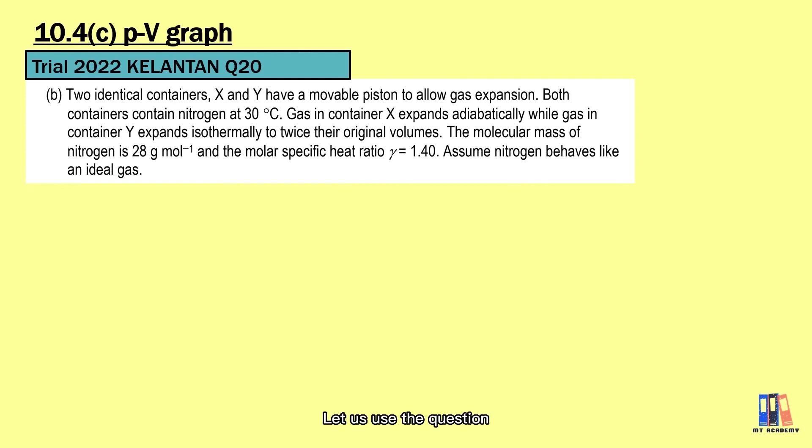Let us use the question from Trial Paper of Kelantan in 2022 as our case study. We are given with two containers with a movable piston. Both contains nitrogen at 30 degrees Celsius. The gas expands adiabatically in container X, while the gas in container Y expands isothermally to twice of the original volume. Before we plot the graph, let us obtain some information about those two processes.